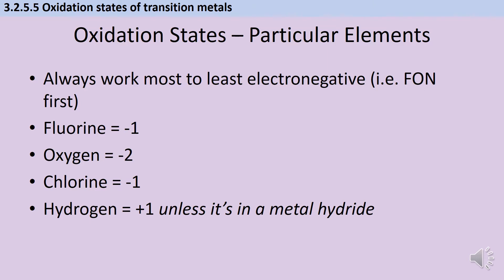There are more rules than this, but I've left out all of the ones that don't apply when talking about transition metals — if you need the full set, go look at the redox videos. In terms of transition metals: fluorine is always going to have an oxidation state of minus one, oxygen will be minus two, chlorine will be minus one, and hydrogen is plus one unless it's in a metal hydride. If hydrogen bonds to a transition metal it's going to be minus one instead.